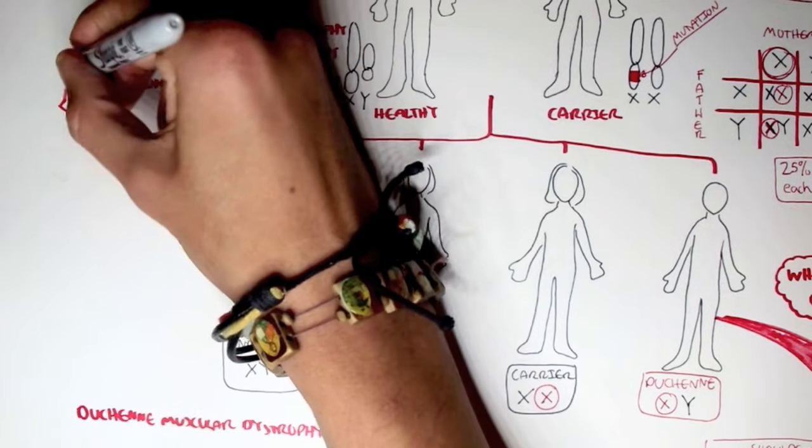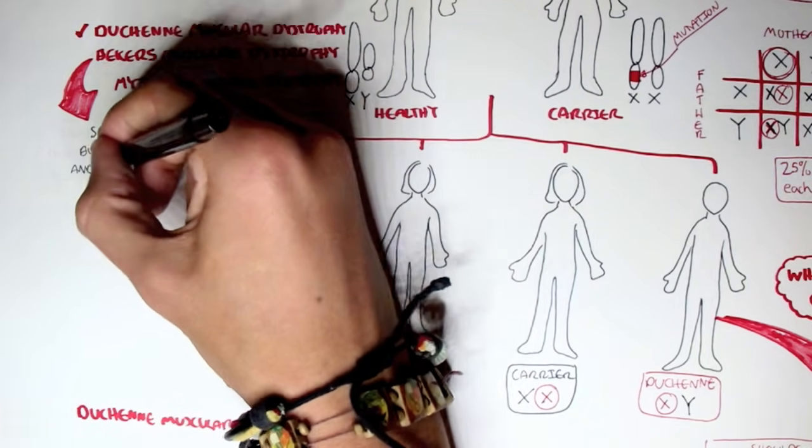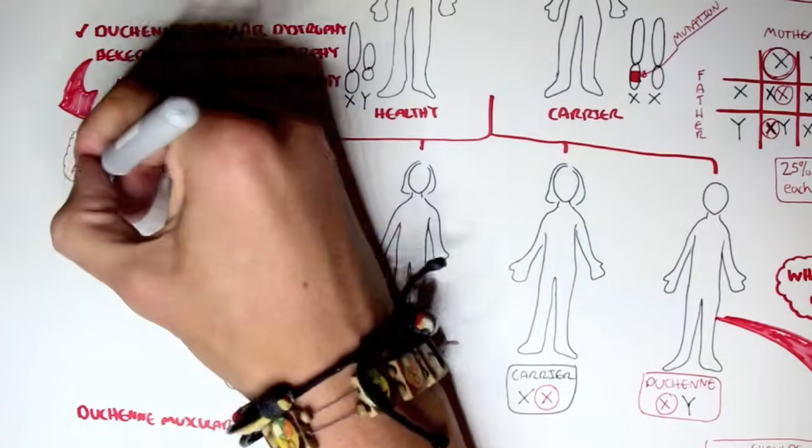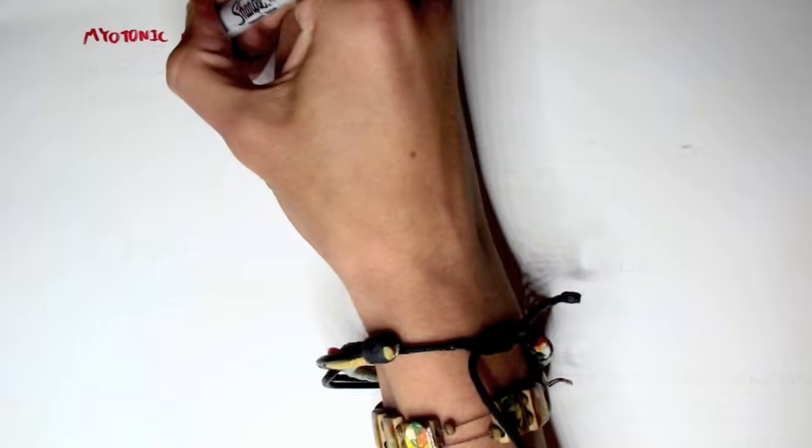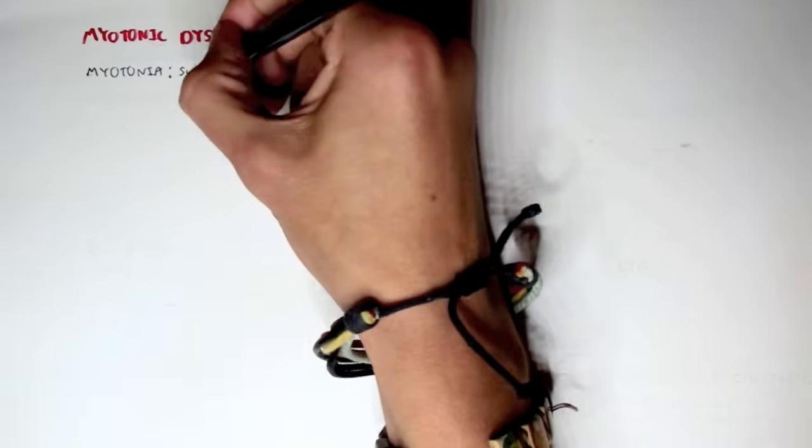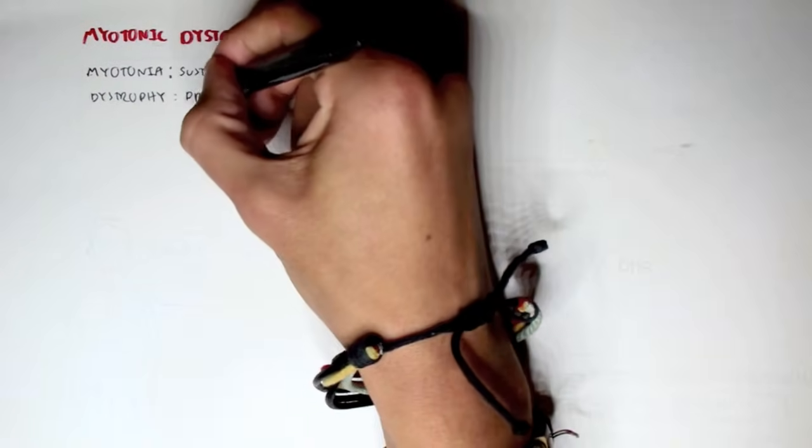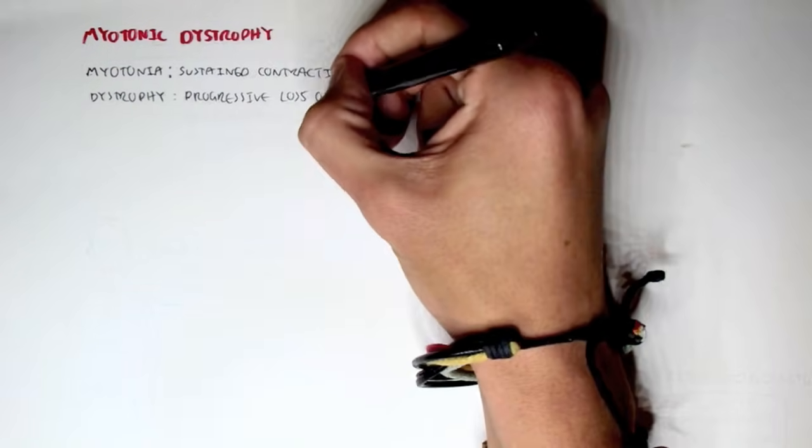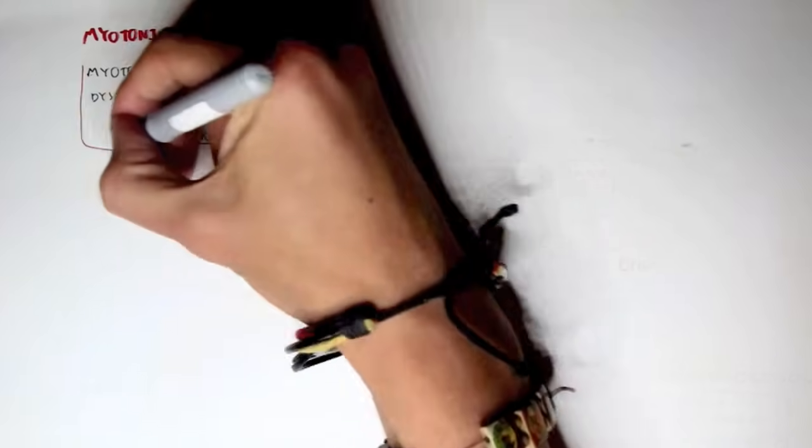So we just looked at Duchenne muscular dystrophy. Now, Becker's muscular dystrophy is the same as Duchenne muscular dystrophy, but it's less severe and has a slower progression. Now for myotonic muscular dystrophy. Myotonic, what does it mean? Well, let's break it down. Myotonia means sustained contraction of the muscle. Dystrophy, as we know, is progressive loss of skeletal muscle, but actually dystrophy can mean any type of muscle being degenerated.